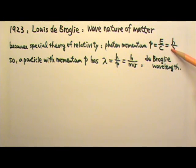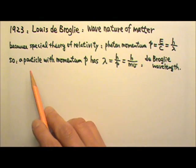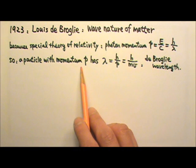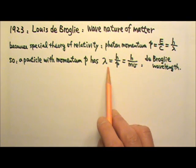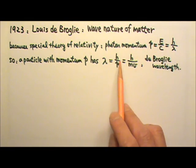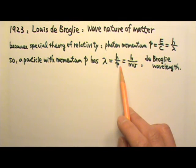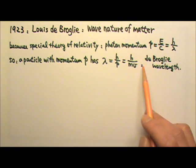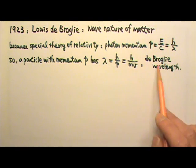This also equals to Planck's constant h divided by the wavelength lambda. So de Broglie proposed that a particle with momentum P is associated with or guided by a wave of wavelength lambda that equals to h over momentum P, which is h over mv. And this wavelength is now called the de Broglie wavelength.